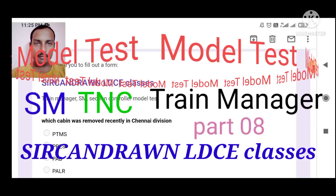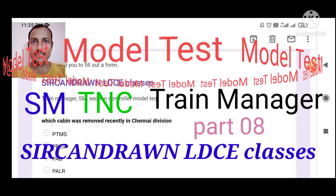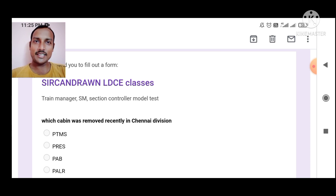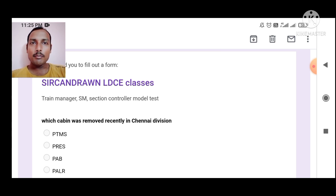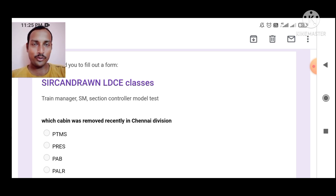Hi friends, welcome to Sirkandron LDCE Classes. In this class, we are going to participate in a model test for Station Master, Goods Guard, Section Controller, and Train Clerk. A link is available in the description box from where you can participate in that model test paper. By this model test, you can analyze your preparation and know where you need to prepare more.